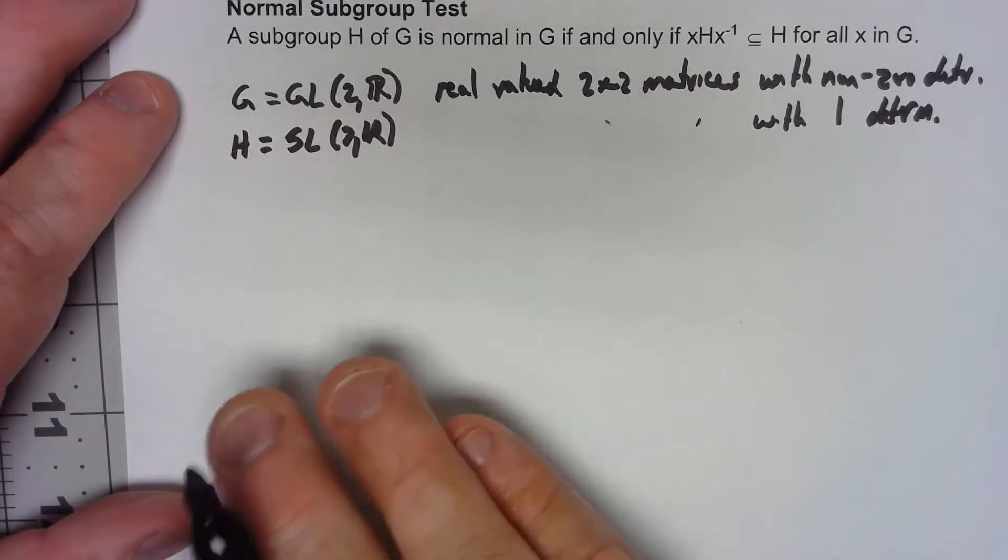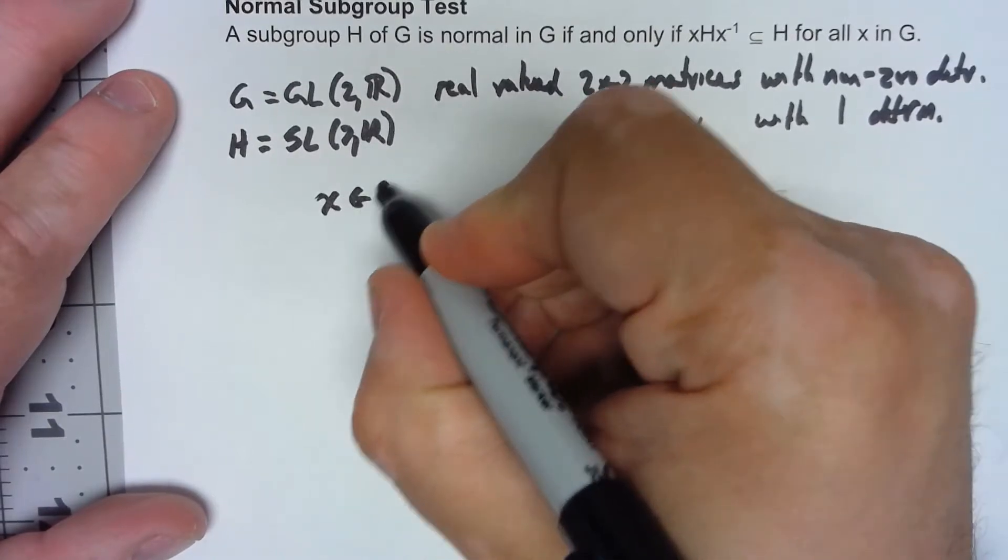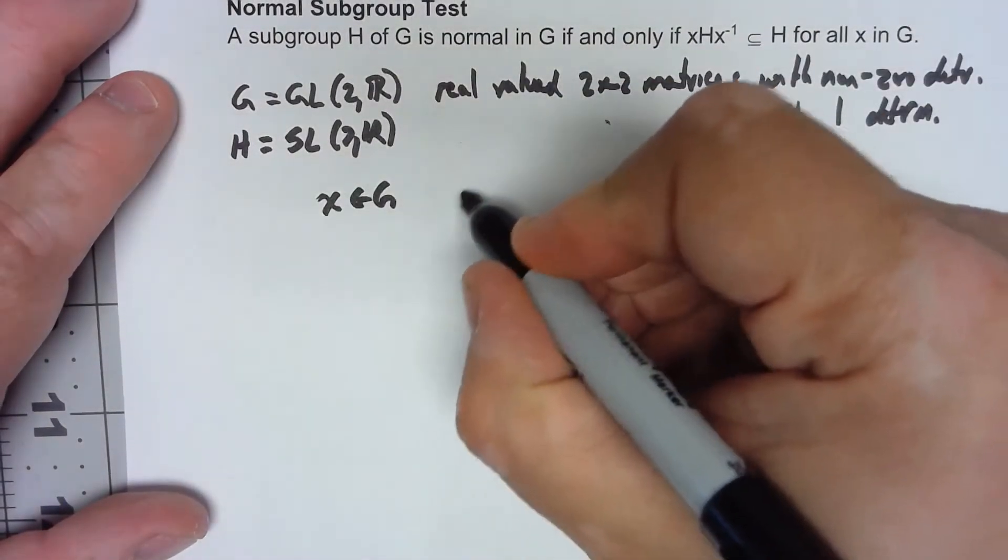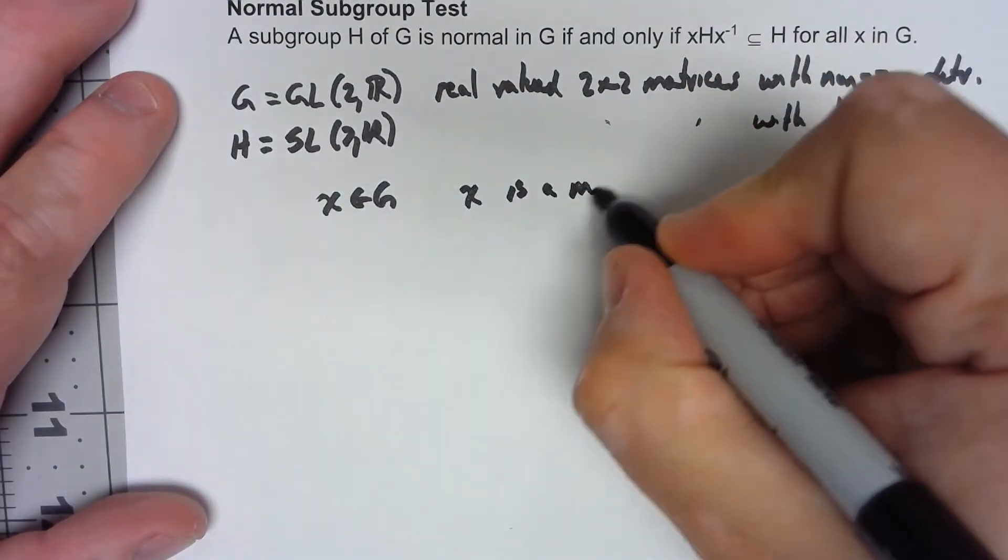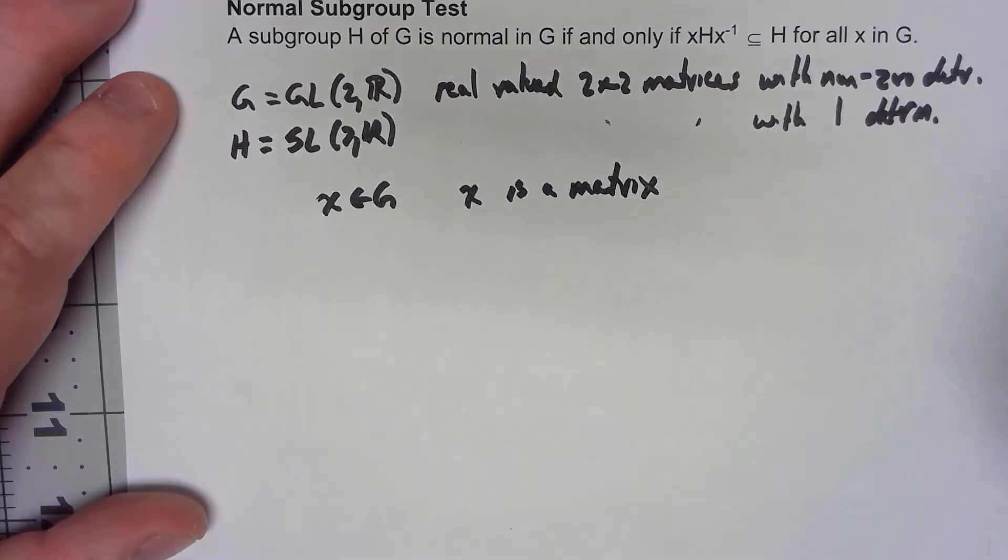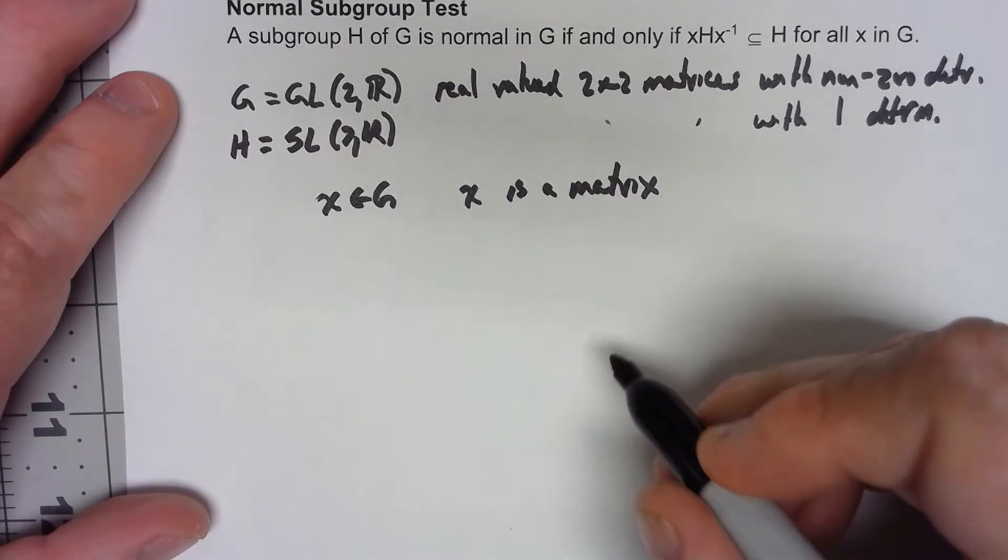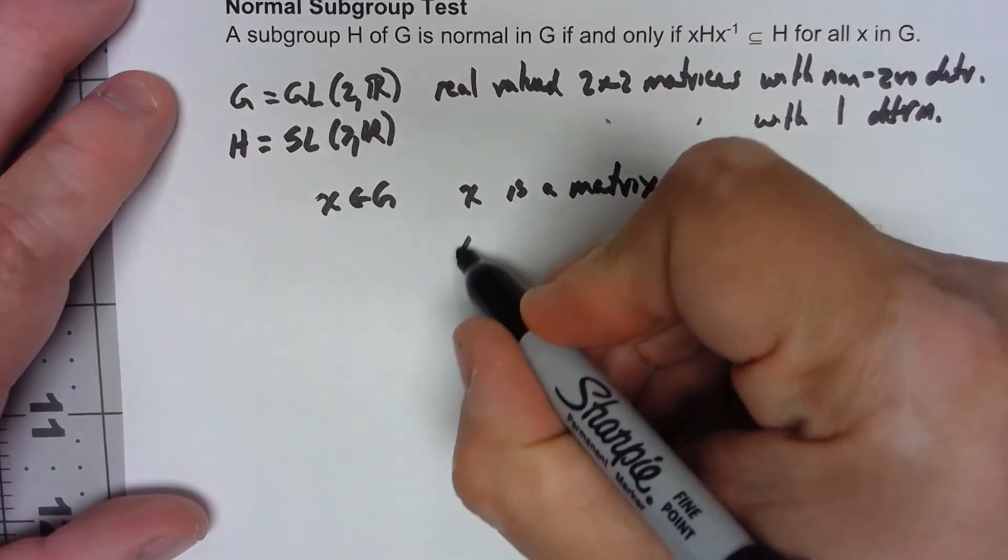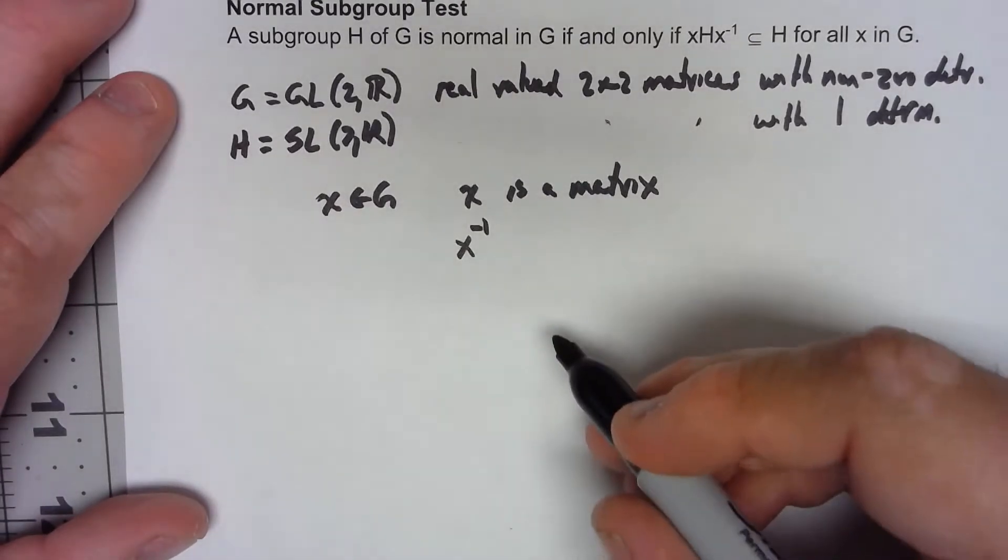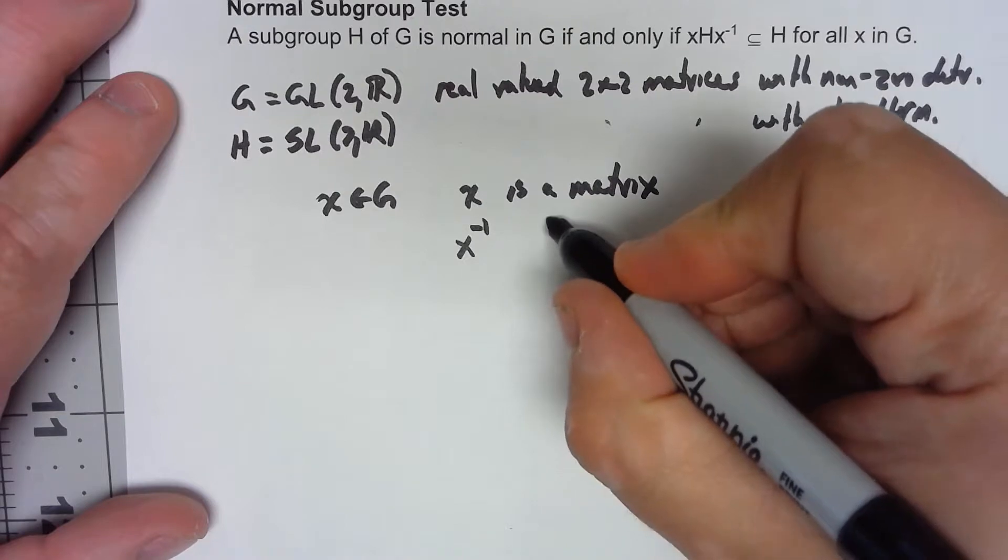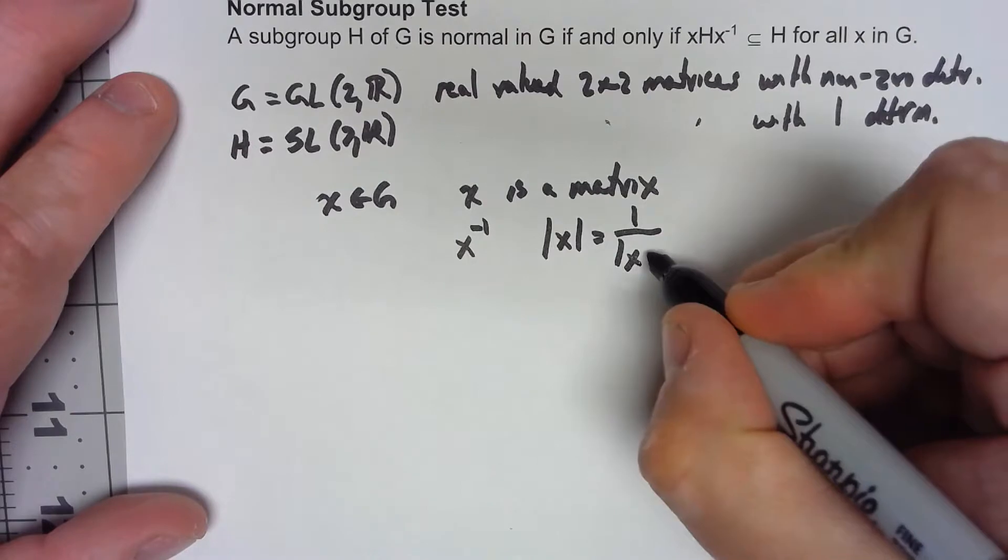So this is definitely a subgroup of that. And now let's consider any sum, so in terms of the definition it'd be some x in G, but that's going to be some matrix. Well, the thing to remember is that certainly if it's got a nonzero determinant, it's got an inverse and the determinant of X is 1 over the determinant of X inverse.